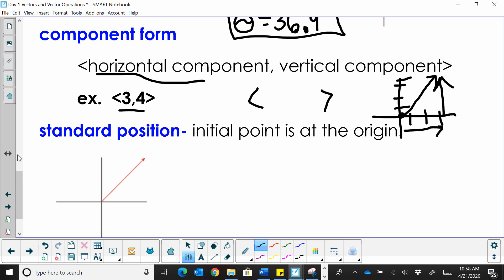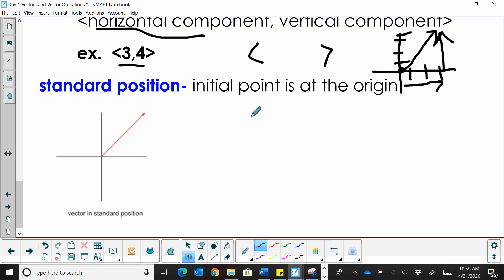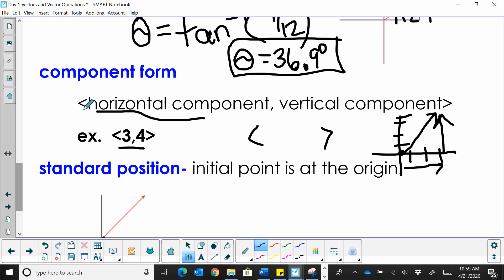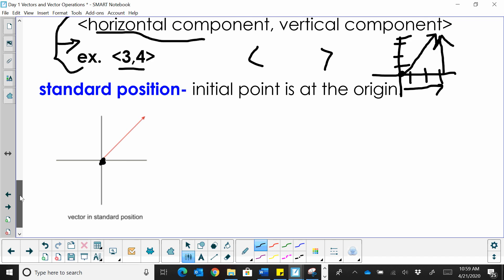And there you go. So what is standard position? We've kind of started alluding to it. The standard position of a vector is when the vector starts at the origin. So in component form, you are looking at a vector that is in standard position. In other words, its initial point is the origin. So 3, 4, the vector 3, 4 starts at the origin, goes over 3, and up 4 in standard position.